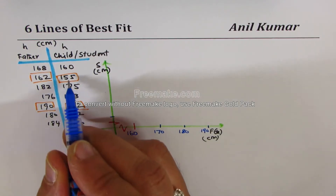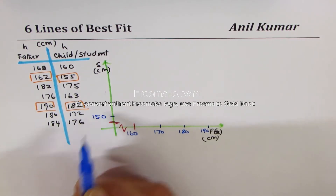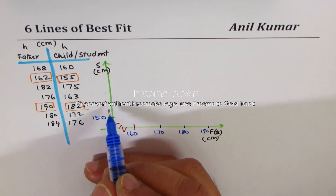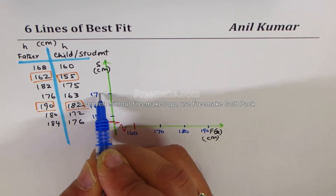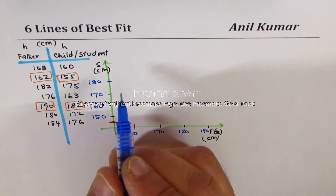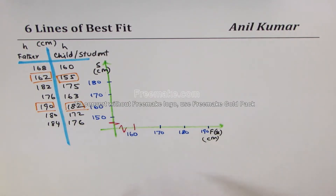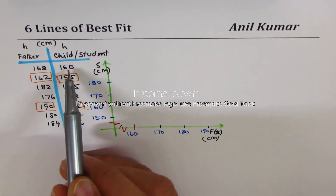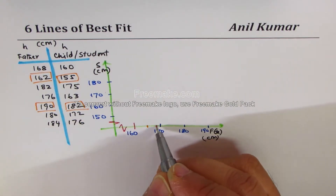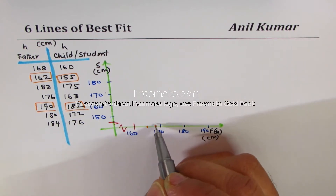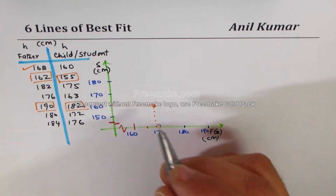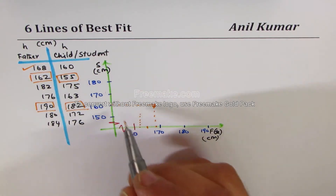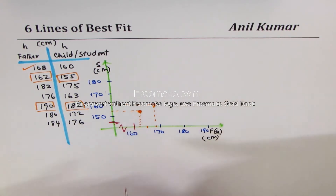My sketches will be rough, but I hope they give you an idea of how to do things — on graph paper you'll get much better results. Let's plot points one by one. The first point, 168/160: 168 is closer to 170, and 160 is right there, so we get our first point. The second point is 162/155: 162 is slightly above 160, and 155 is midway between 150 and 160, so those two meet here.